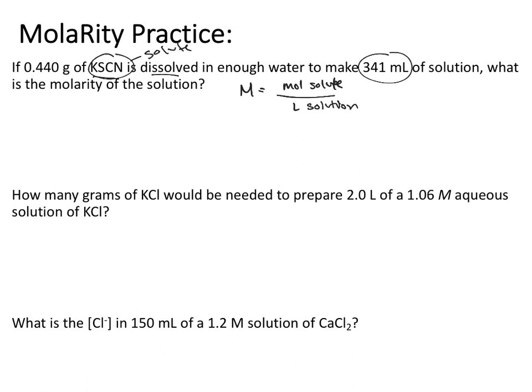The first thing we'll do is take our 0.440 grams of KSCN and convert it to moles. We set up our conversion with 0.44 grams KSCN divided by the molar mass, giving us 0.00452758 moles of KSCN.